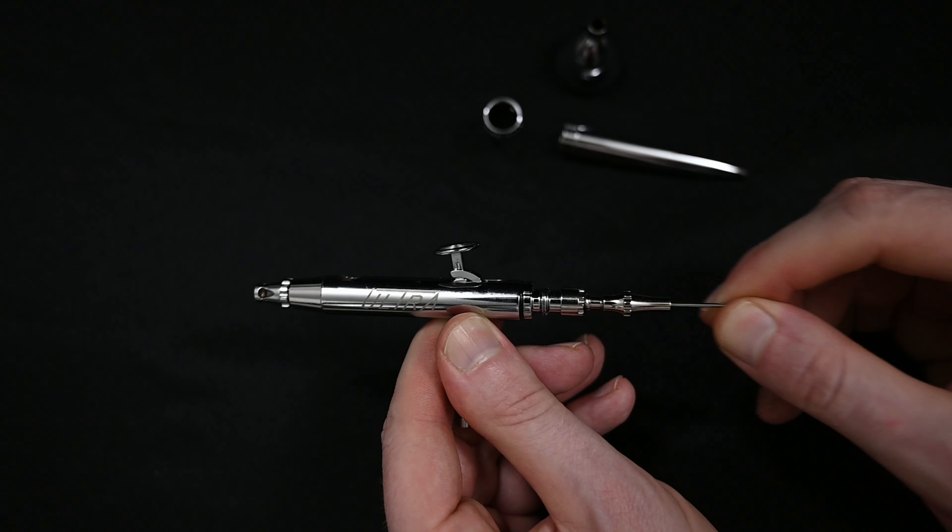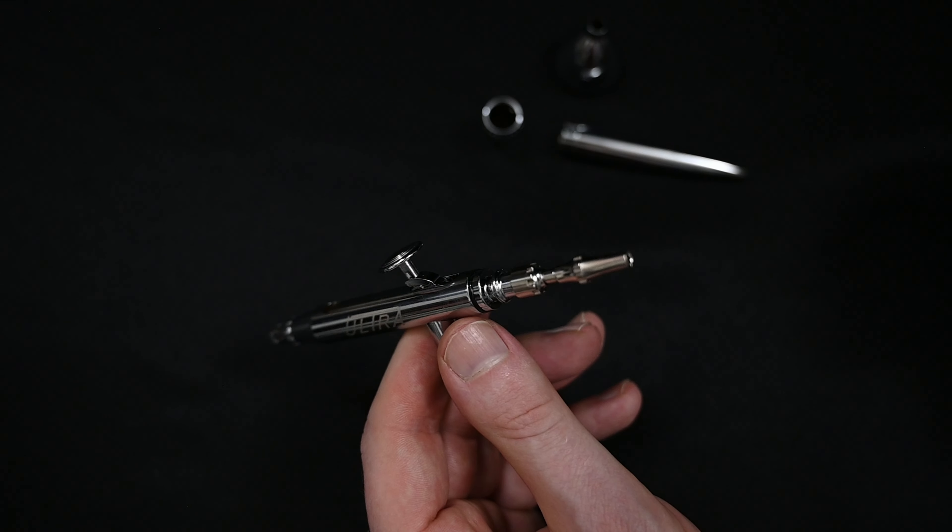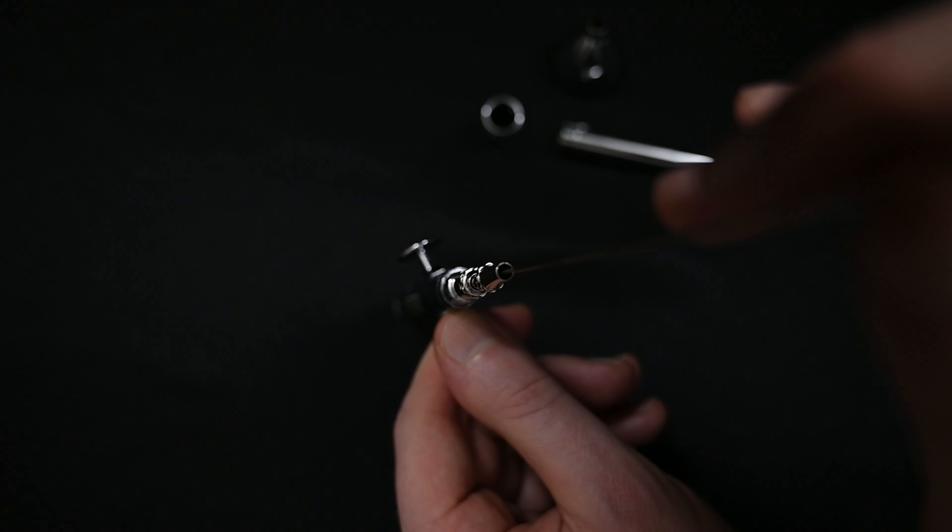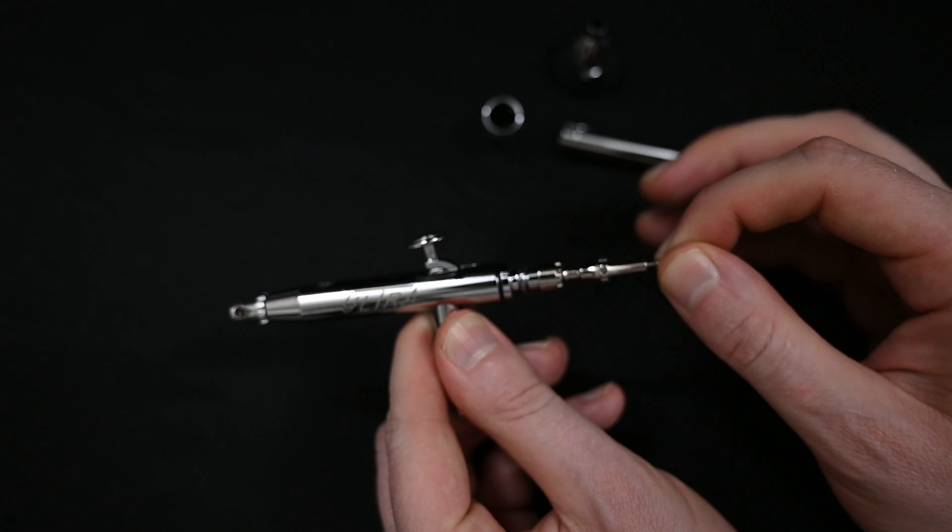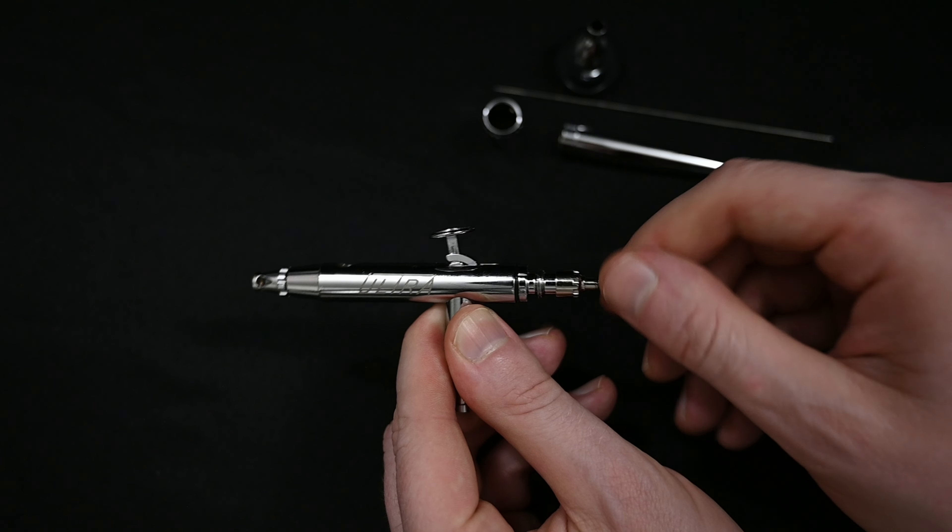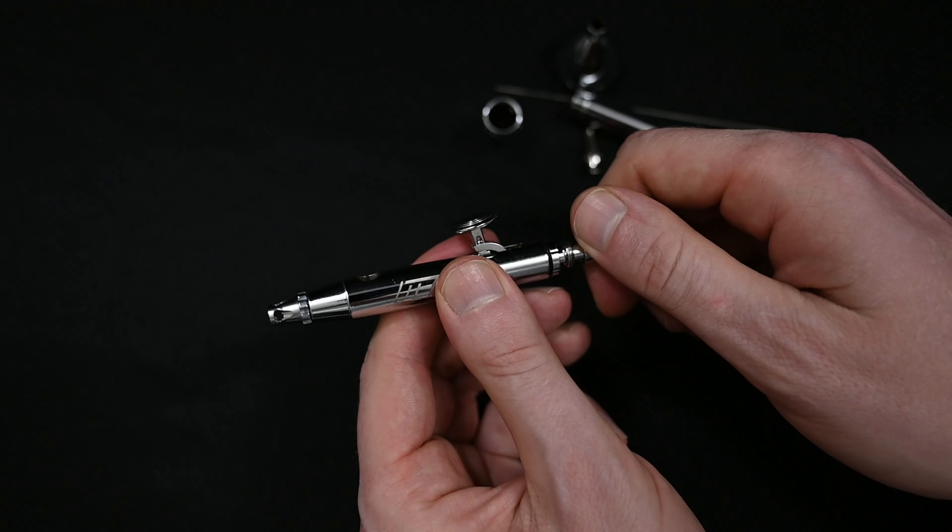To remove the needle, you just loosen up this chucking nut, and then you can pull it out the back. And the chucking nut has a pretty nice design here too. It's nicely finished and tapered so that the needle always goes in the correct way. So I'll fully unscrew it to remove it from the airbrush, and this area right here is the spring assembly system.